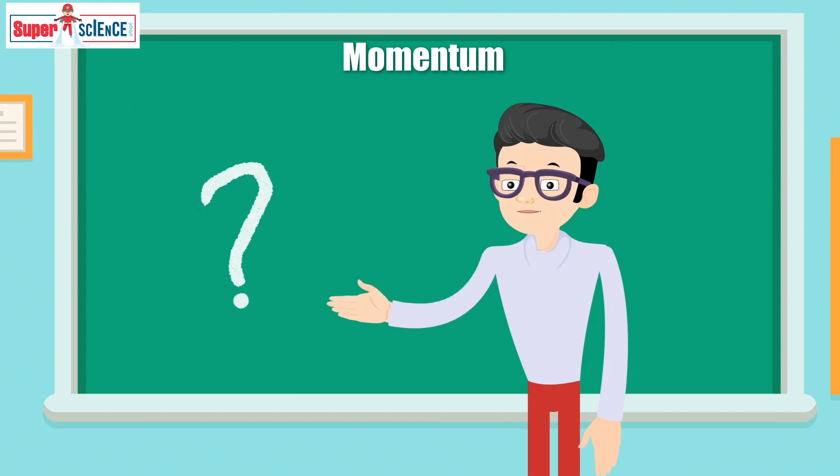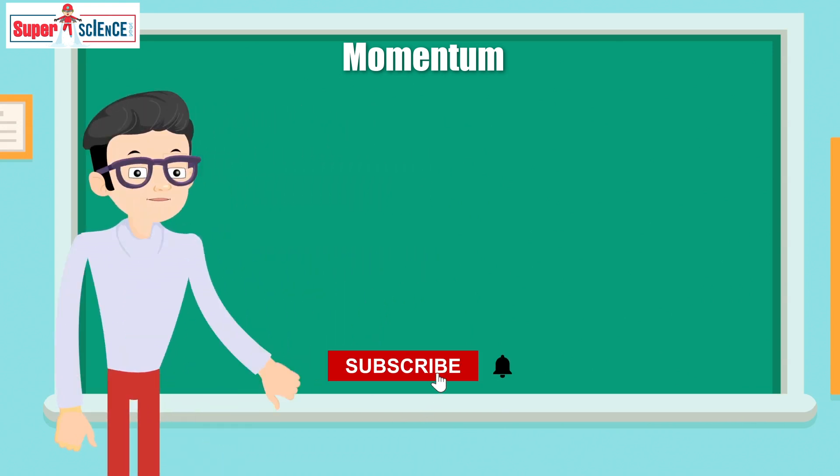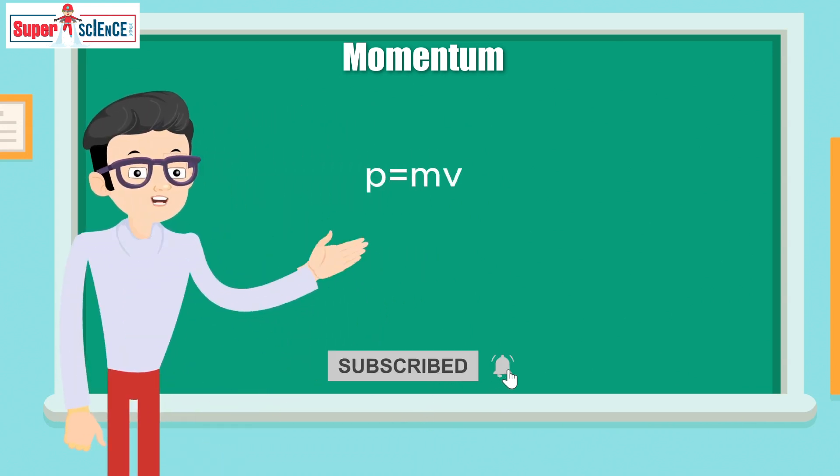So what is momentum? We can understand all of this from a simple equation. P is equal to M multiplied by V. What this formula means is one simple sentence.